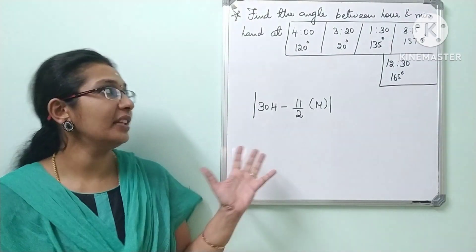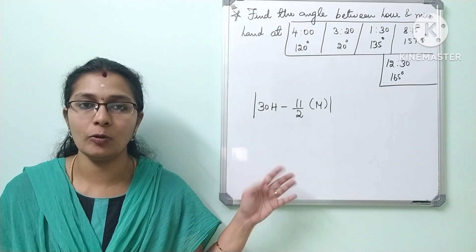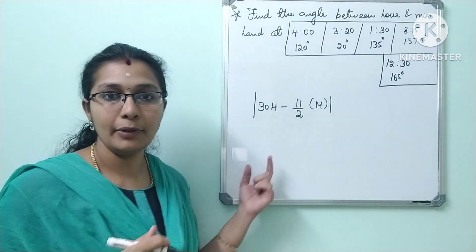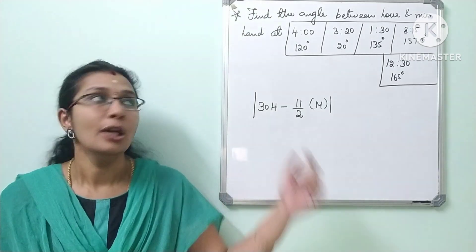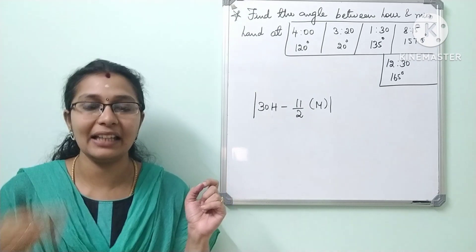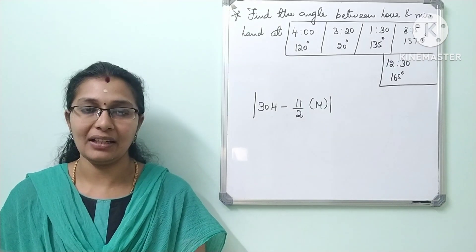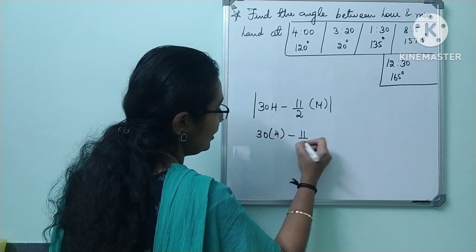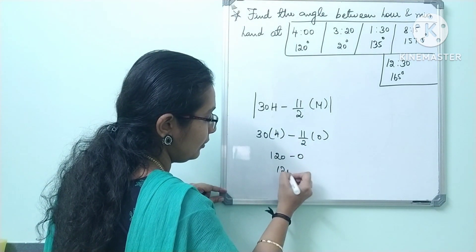Now we will talk about the formula method to solve all these questions. The formula is: modulus of (30H minus 11/2 into M), where H represents hours and M represents minutes. If you get a negative answer, the modulus makes it positive. Applying this to 4 o'clock: 30 into 4 minus 11/2 into 0. Something into 0 is 0, so the answer is 120 degrees — which matches our first answer.